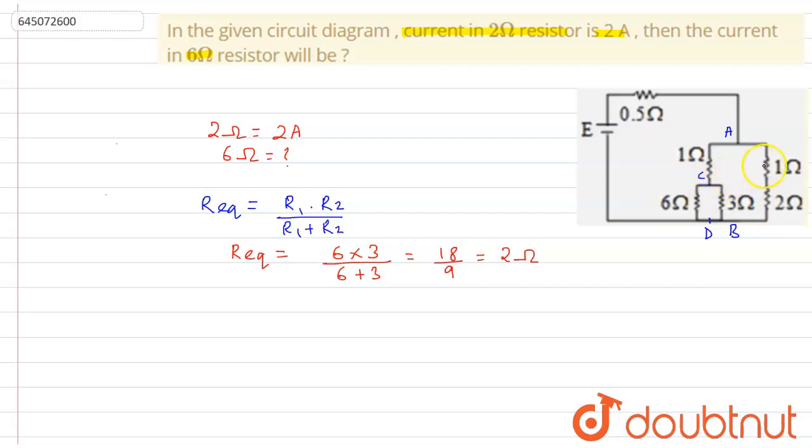So if the two resistances are same in both branches, what we can conclude is that if 2 ampere is flowing through this branch, then 2 ampere is also flowing through this branch.